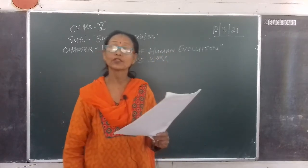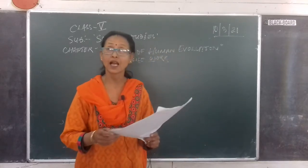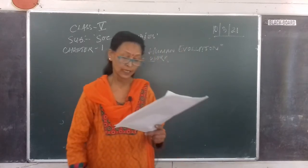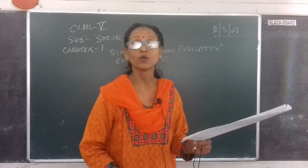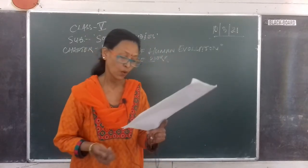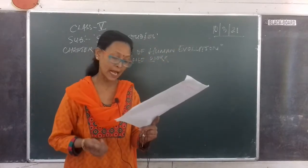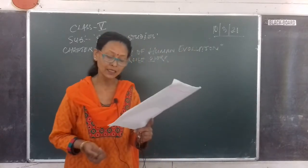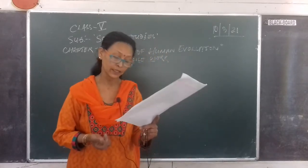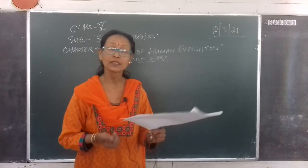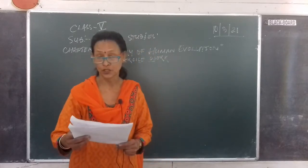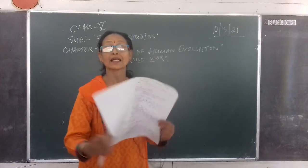Now we will move on to the next question: write short notes. I think this is the last question from this chapter, that is the story of human evolution. We will discuss short notes on the Stone Age. The stone age was a broad prehistoric period when stones were widely used to make tools and weapons. It lasted for roughly 3.4 million years and ended between 8700 BCE and 2000 BCE.